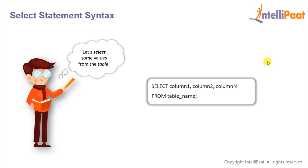So let's have a look at the syntax. First we give the keyword SELECT and then list down all of the column names that we want to select, following which we give the keyword FROM and then finally give the table name from which we are supposed to select these columns.